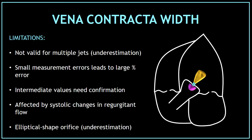Measuring the vena contracta width also has some limitations. Number one, it is not valid for multiple jets because there is a risk of underestimation. Number two, small measurement errors lead to a large percentage of error. Number three, intermediate values need confirmation. Number four, it is affected by systolic changes in regurgitant flow. And number five, remember that the orifices have an elliptical shape and there is always a risk of underestimation.